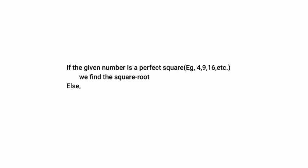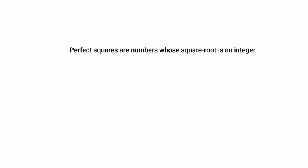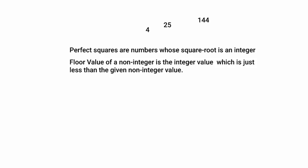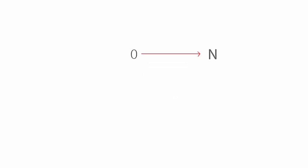Today we will find the square root of a positive integer using binary search. If the given number is a perfect square we find the square root; otherwise we find the floor value of the square root. Perfect squares are numbers whose square root is an integer, like 4, 25, or 144, with square roots of 2, 5, or 12. The floor value of a non-integer is the integer just less than it — for 9.67 the floor is 9, for 8.01 it is 8, and for 6.999 it is 6.